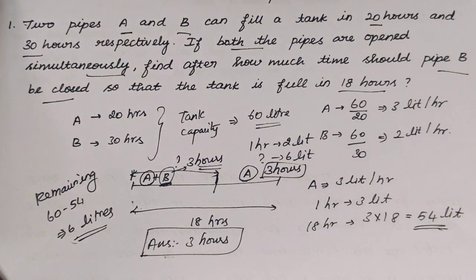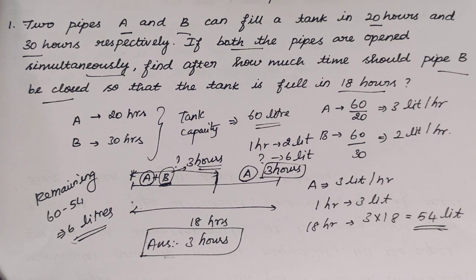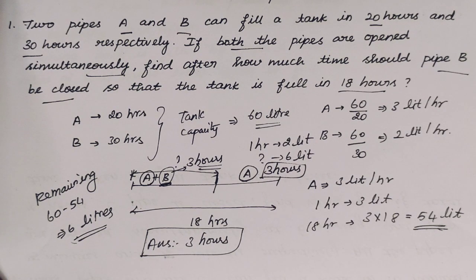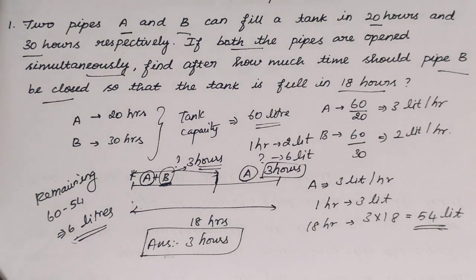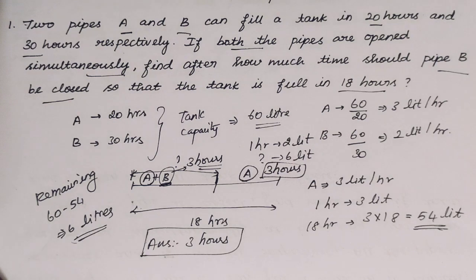Clear? So in the first question, initially both pipes are open and at a certain time one pipe is closed — that is the closing concept. You find the total capacity, find out the liters filled by the pipe that stays open the whole time, find the remaining liters, and then calculate how long the other pipe runs. Let's see the second question.